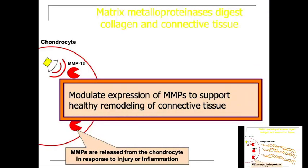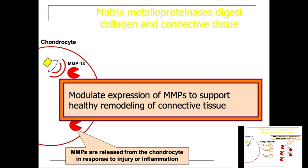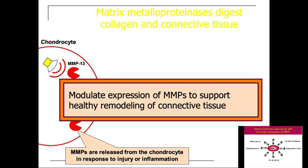This visual description shows the chondrocyte on the left with the MMP-13 structure, and collagen strings off to the right. The MMPs are released from the chondrocyte in response to injury or inflammation, and start to degrade and break down collagen tissue during an inflammatory response — MMP-1s and MMP-2s break it all down. We can modulate the expression of MMPs to support healthy remodeling.